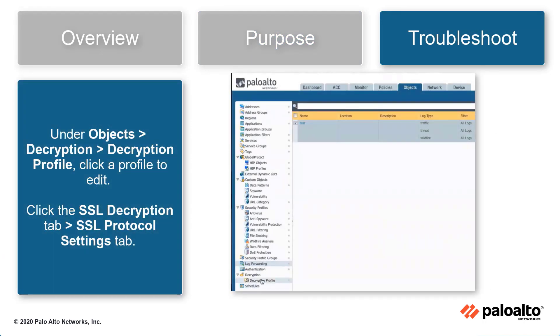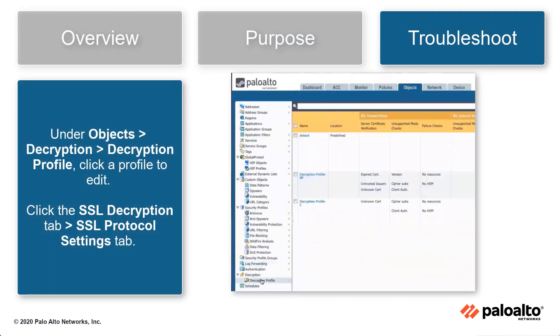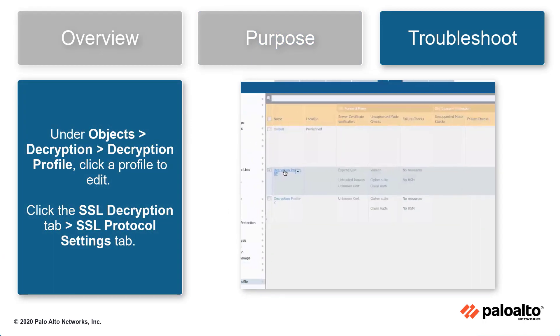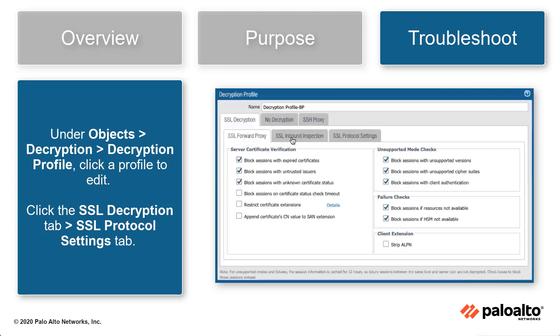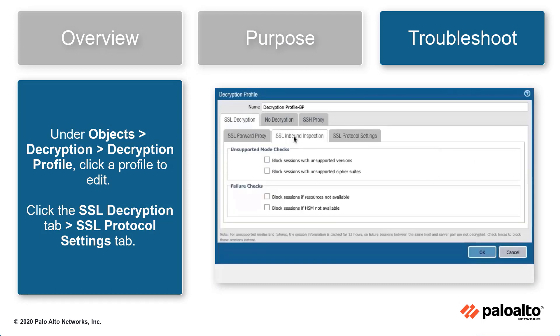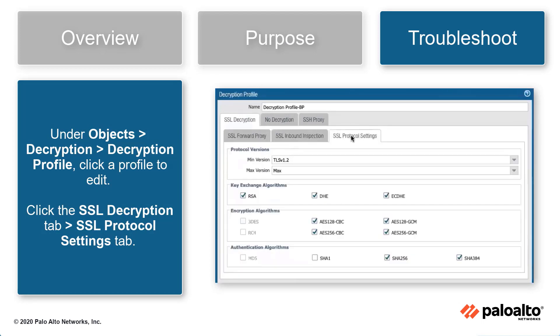Under Objects, Decryption, Decryption Profile, click a profile to edit. Click the SSL Decryption tab, then click the SSL Protocol Settings tab.